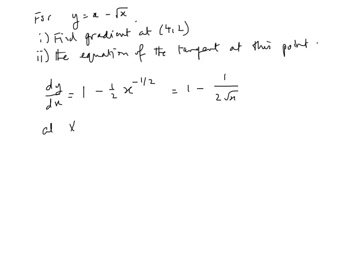So we end up with 1 - 1/(2√x). Now at x = 4, we substitute that into dy/dx, which is 1 - 1/(2√4), which is 2. And so we end up with 1 - 1/4, which is 3/4. So the gradient is 3/4.